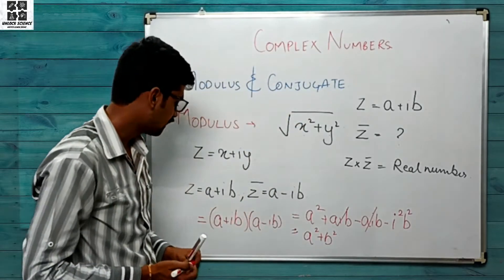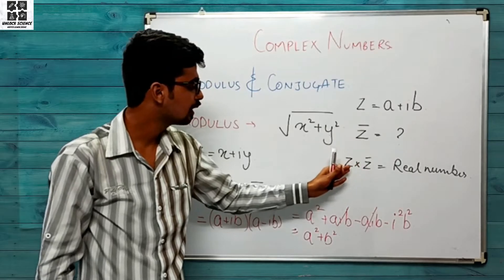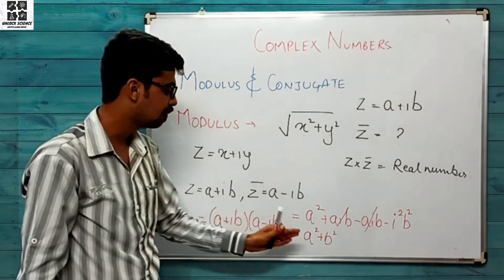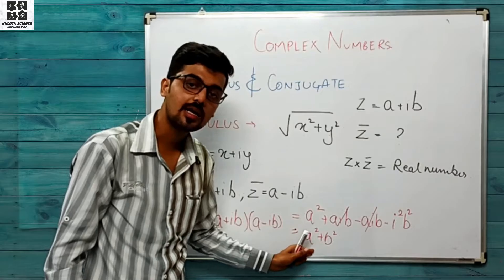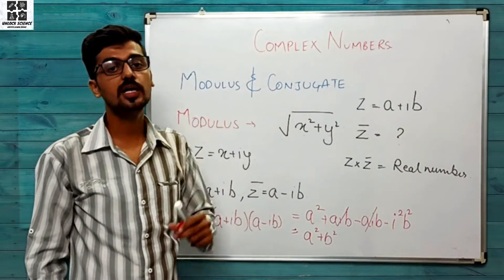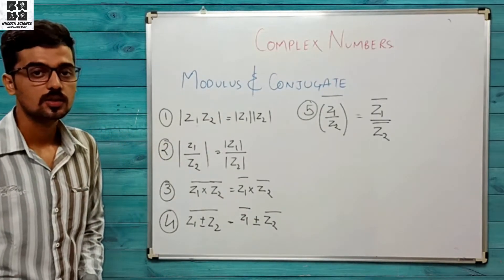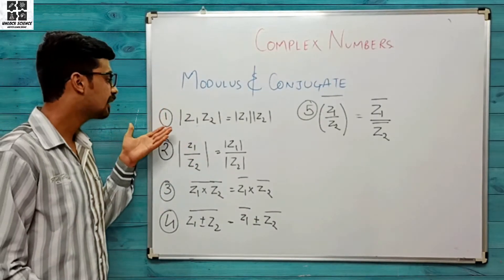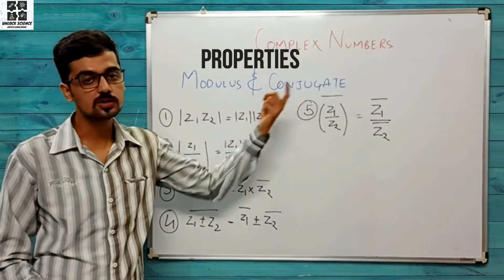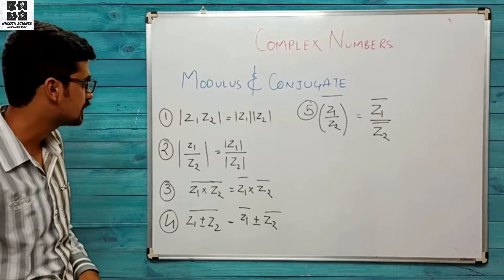Toh yeh hamare paas kya nikl ke aagaya — conjugate of a complex number ek aisa number hota hai jo ki us number mein multiply karne par humein ek real value de. Ab dekhte hain ki modulus aur conjugate mein aapas mein kya relation hota hai — kuch properties hain jo modulus aur conjugate of a complex number ko solve karne mein help karengi.